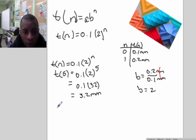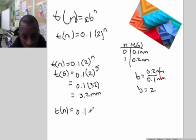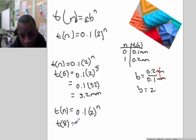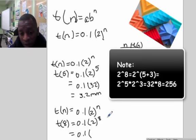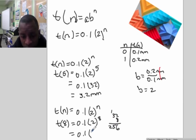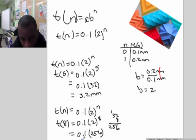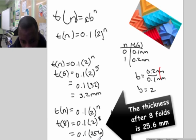Now we find the thickness for eight folds. Using our exponential function, we substitute eight for n. Two to the eighth equals two to the fifth times two to the third, which is 32 times 8, giving us 256. So a tenth of 256 is 25.6 millimeters.